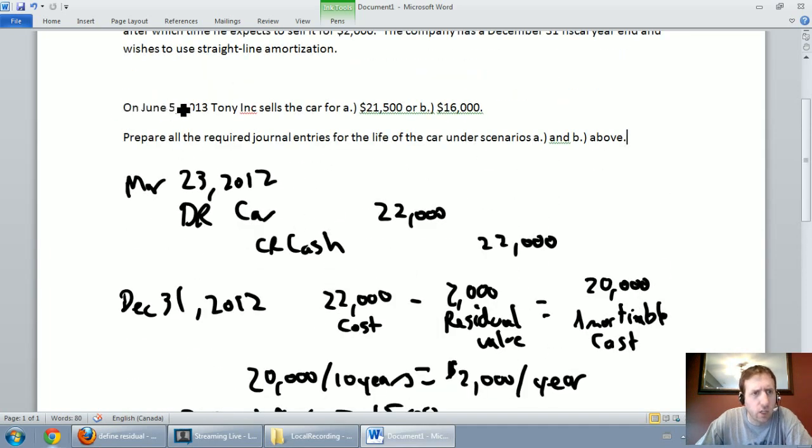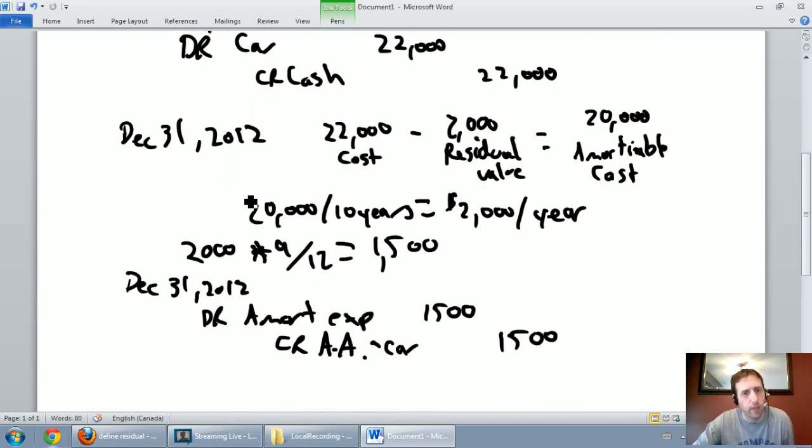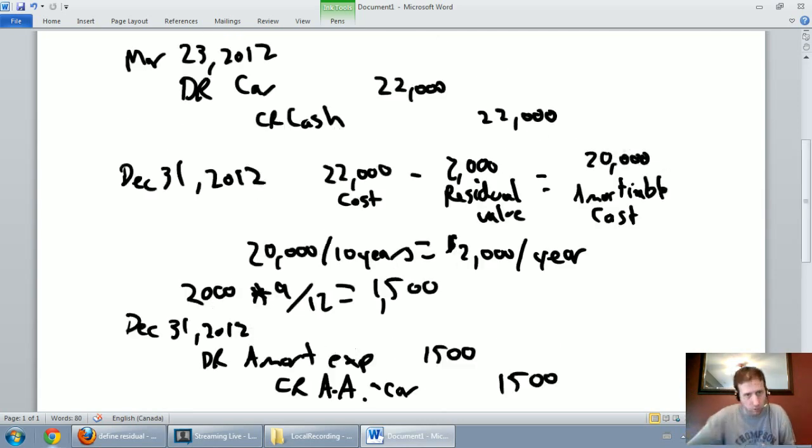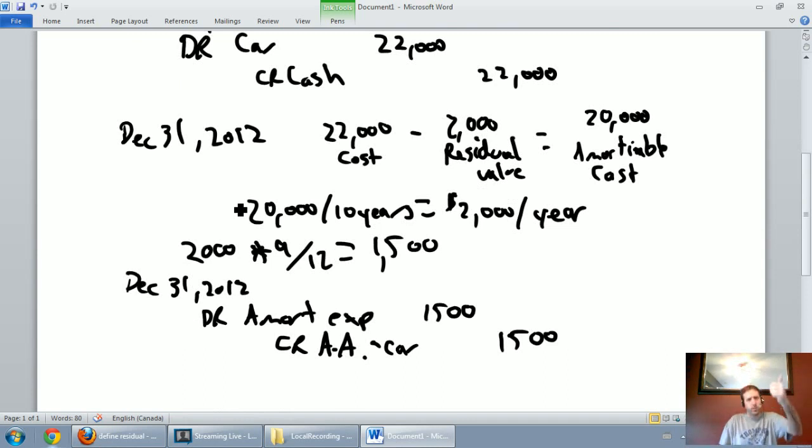Now, in the question it tells us on June 5th, 2013, Tony Inc. sells the car for $21,500. Before we actually sell the car, we need to amortize it up to the date of the sale. I've already amortized it to December 31st, 2012. I need to record amortization between December 31st, 2012 and when I sell it. I need to record it for January, February, March, April, May. I round to the nearest month, so I'm not going to count June. I need to amortize this asset for five months.